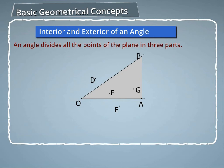The part or region of the plane which contains points like D, E is called exterior of the angle.